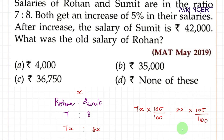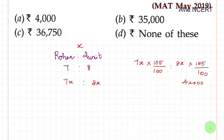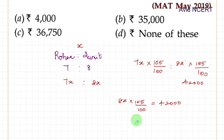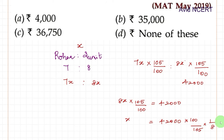Sumit's salary equals 42,000, which is this part: 8x times 105 by 100 equals 42,000. Finding x from this — taking inverse — x equals 100 by 105 times 1 by 8. Simplifying this, the value we get is 5,000.